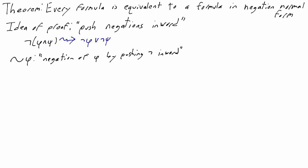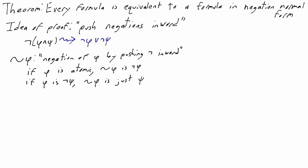To say that formally: if phi is an atomic formula, squiggly phi is just the negation of phi. And that's fine, because when phi is atomic, negation of phi is in negation normal form. But if phi is the negation of a formula — if phi is not psi — then squiggly negation of phi is just psi. Not not psi is not in negation normal form, so instead we cancel those negations and get an equivalent formula.